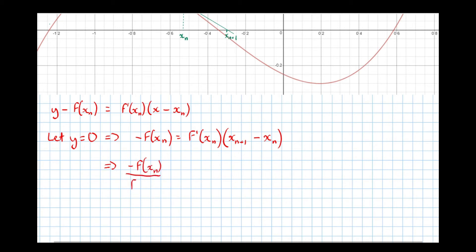This means that minus f of xn over f dash xn equals xn plus 1 minus xn, which then implies, taking the xn to the side, we'll finally get xn plus 1 equals xn minus f of xn over f dash of xn.